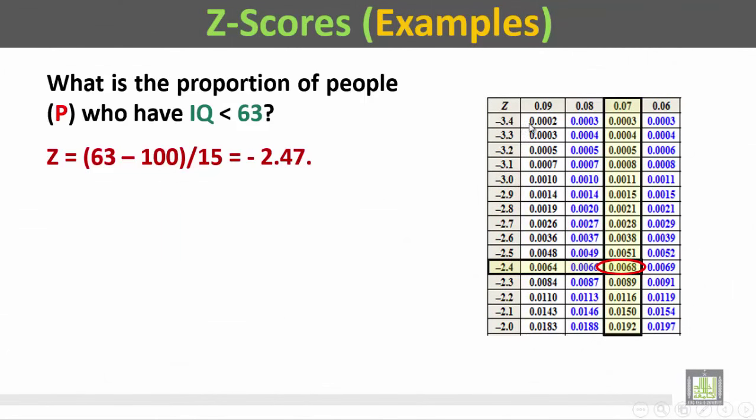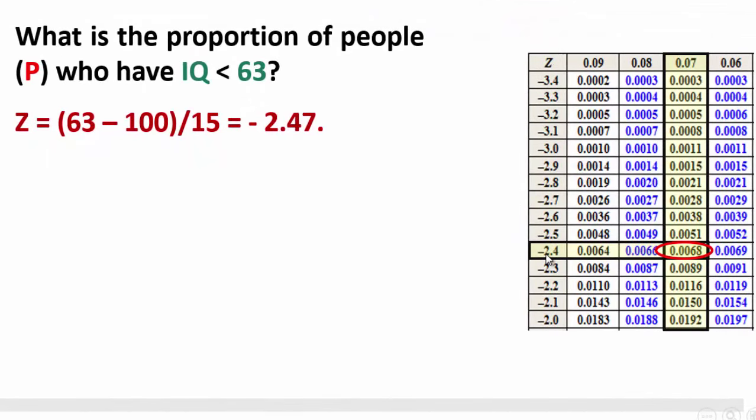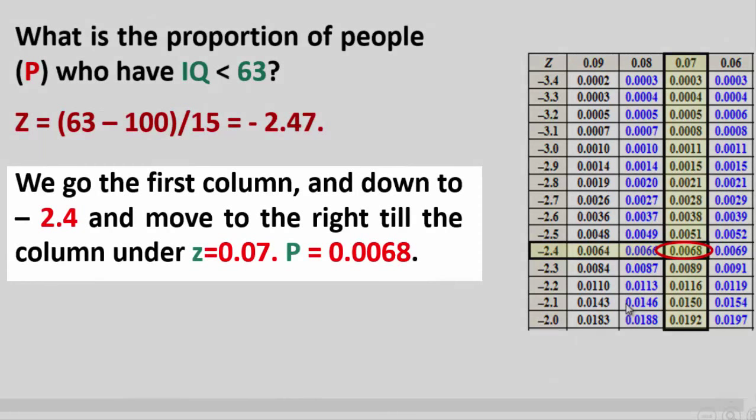We go down to minus 2.4 and move inside under the 0.07 to find the P of 0.0068. So we go first to the first column and down to minus 2.4, and move to the right till the column under Z equals 0.07.